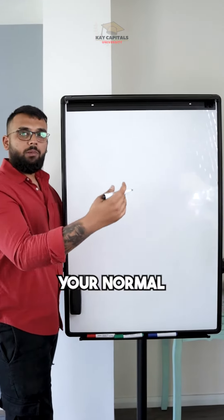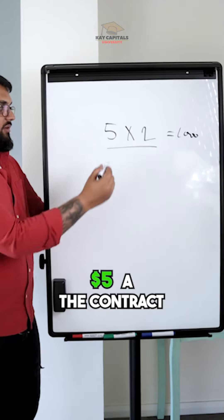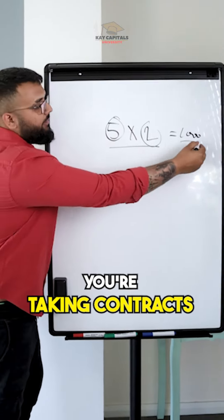Let's say if you enter into a contract, your normal position size is a thousand dollars. Five dollars a contract, you're taking two contracts, becomes a thousand dollars.